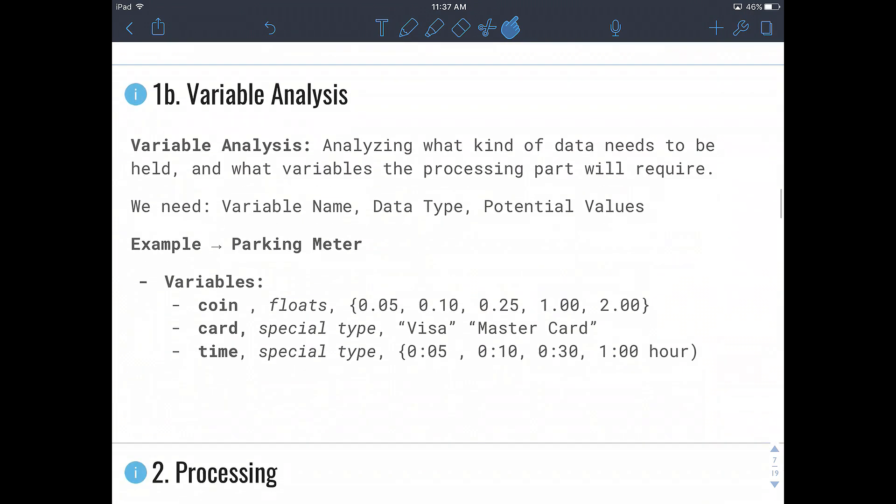Then another important section of the input area is where we do a variable analysis. We're analyzing what kind of data needs to be held and what variables the processing part will require. And to do this, we need a variable name, the data type of the variable and some potential values that we might look at. For example, for a parking meter, we can have a variable called coin, which is a type of float. And we can take the values of a nickel, a dime, a quarter, a looney or a tooney. We can easily create a special type of variable or data type for this as well, but I think float will do.